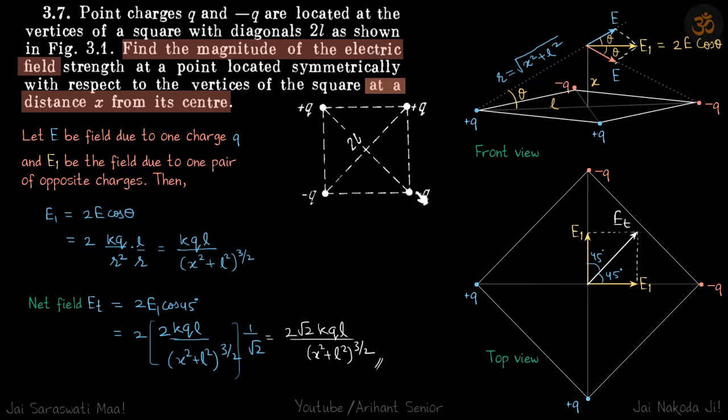We are given four charges on the vertices of a square: plus Q, plus Q, minus Q, and minus Q. The length of the diagonal is given as 2L, and we need to find the electric field at a distance X from the center, vertically above.